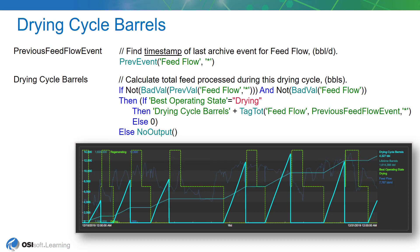If they're okay, then the next step will be to check to see if the best operating state, which we calculated in the previous lesson, is in the drying mode. If it's in drying mode, then we can go ahead and add to our total. We'll take the current value of the drying cycle barrels and add the total of the feed flow using the tagTotal function between the timestamps of the previous timestamp for the feed and the current time. So we'll incrementally add little bits of flow each time that this analytic gets executed.